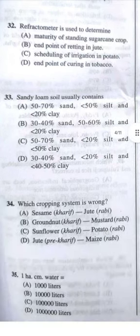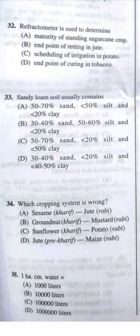Question 33: Sandy loam soil usually contains — for sandy loam, clay content is very less, less than 20%. Silt is less than 50% and sand is 50–70%. So option A for sandy loam soil.